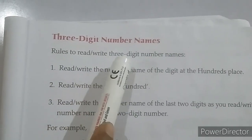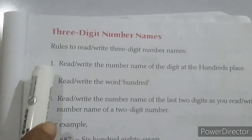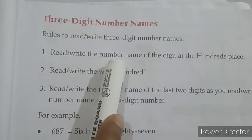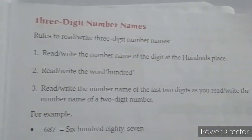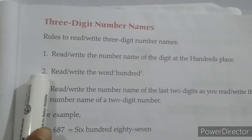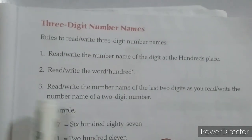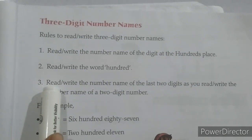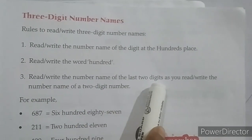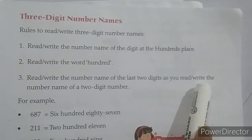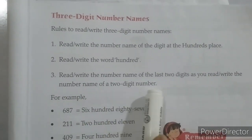Rules to read and write 3-digit number names. Number 1: Read and write the number name of the digit at the hundreds place. Number 2: Read and write the word 'hundred'. Number 3: Read and write the number name of the last 2 digits, just as you write the number name of a 2-digit number.